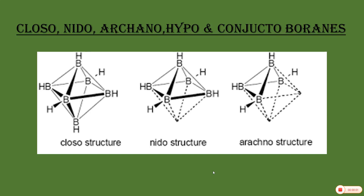Good evening students. Today we will discuss the Closo, Nido, Arachno, Hypho, and Conjuncto boranes. These are the five types of boranes classified on the basis of their structures.